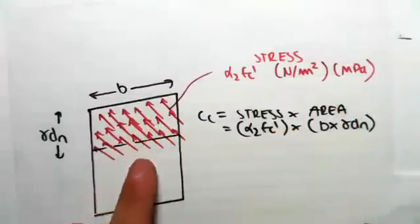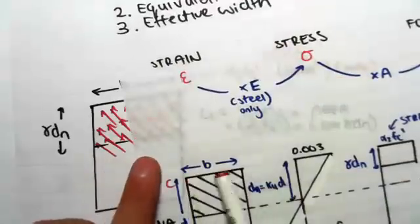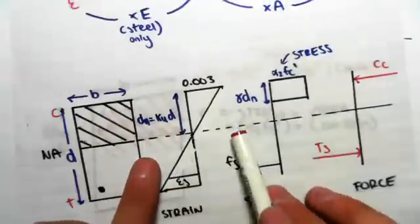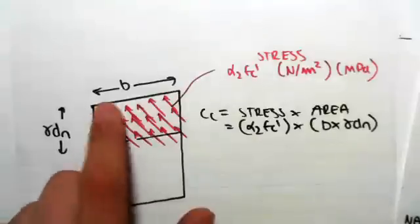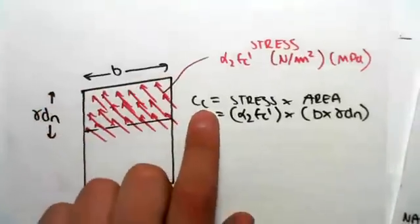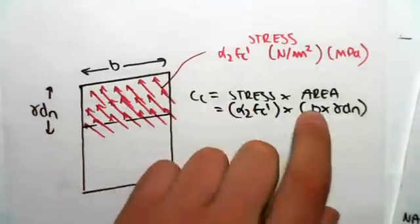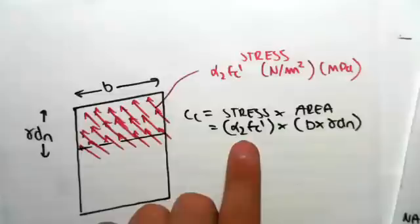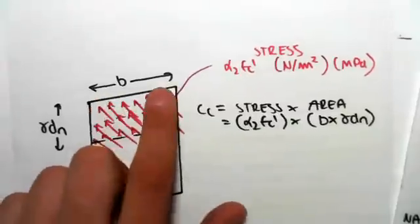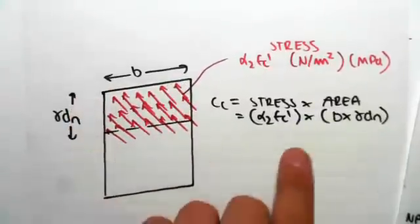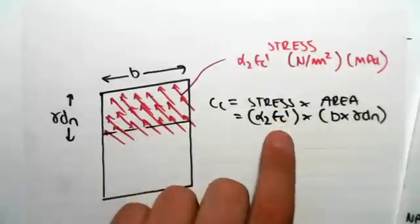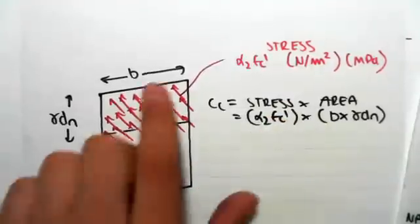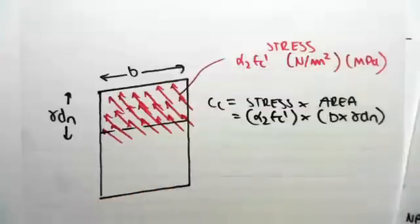Now that stress acts over the width of our section B, and it acts over the depth gamma D_N. So B times gamma D_N. We know that the compression force is stress times area. So the stress is alpha 2 f_c dash. The area is B times gamma D_N. And then it'll give us the compression in the concrete. So this picture is very helpful to sort of simplify what's going on.